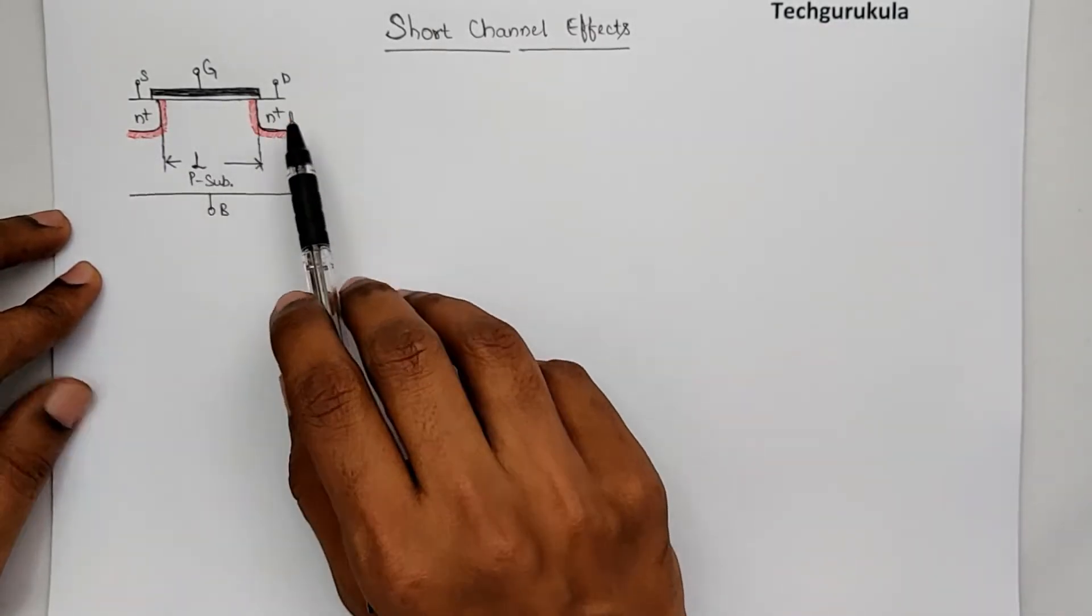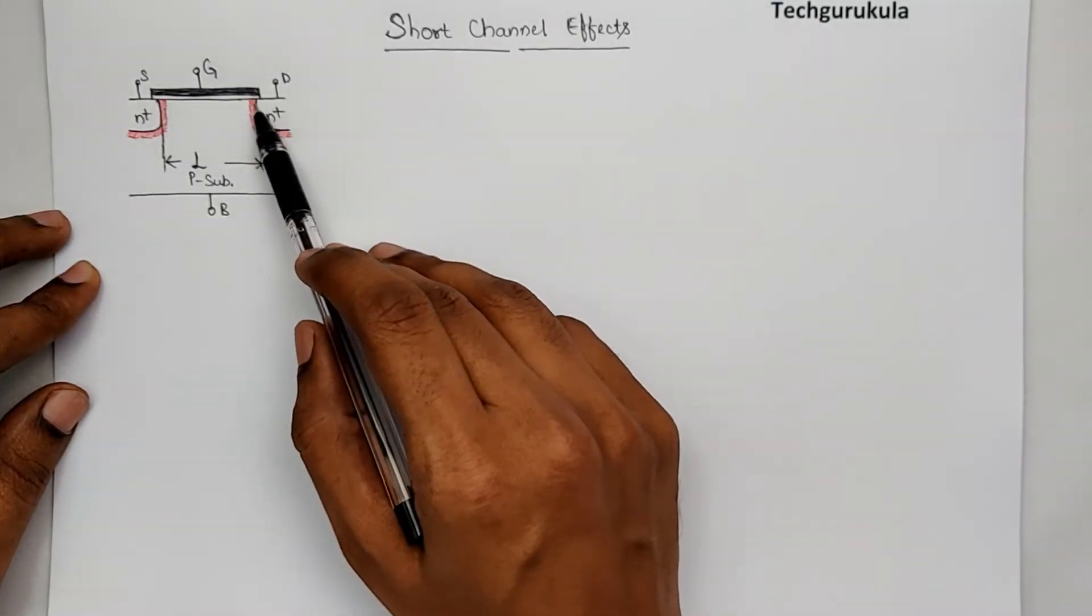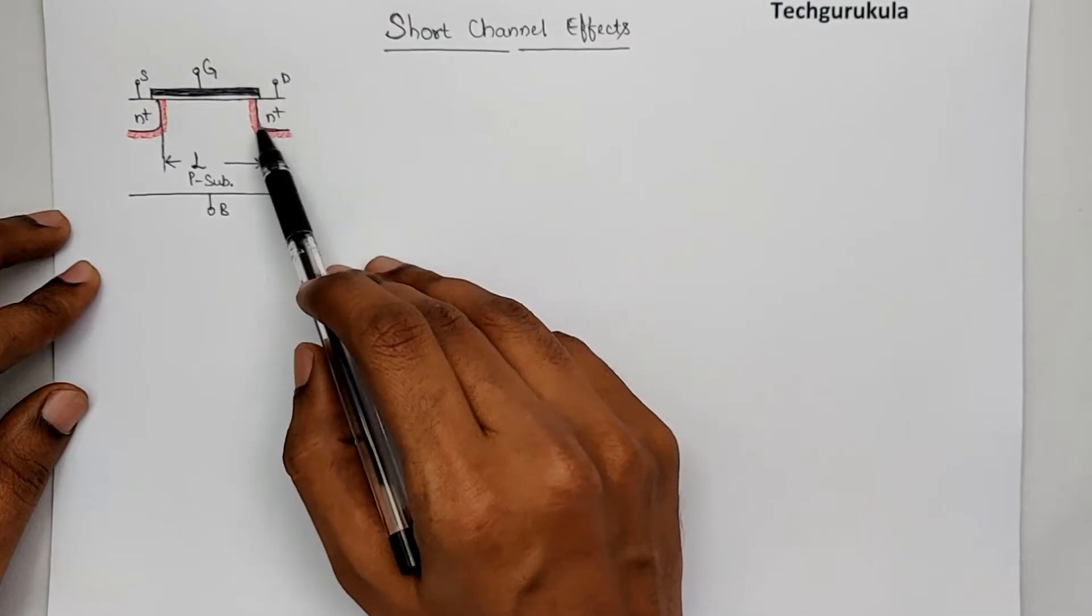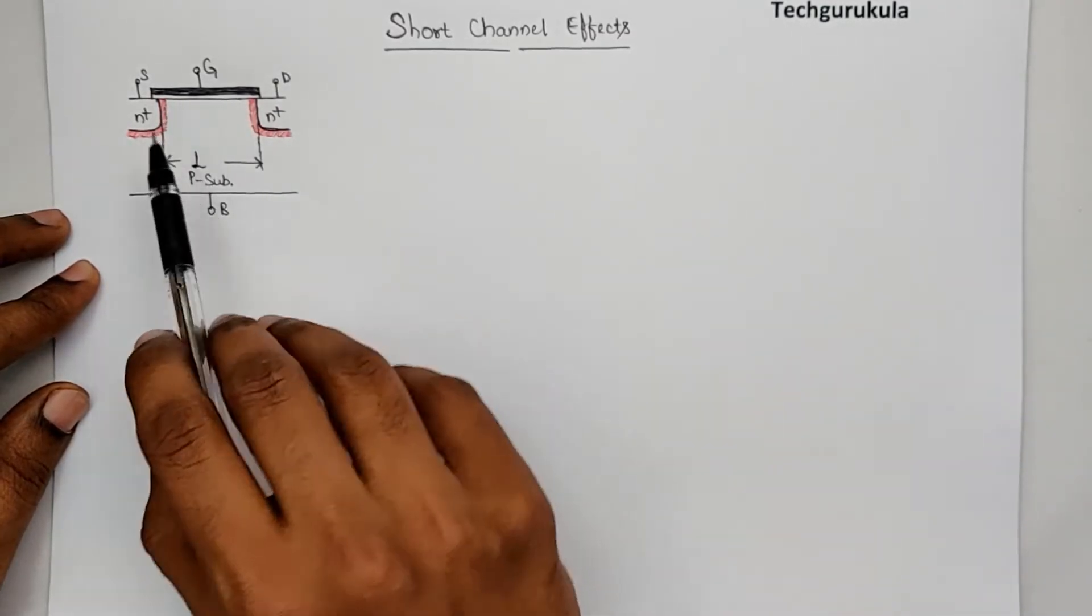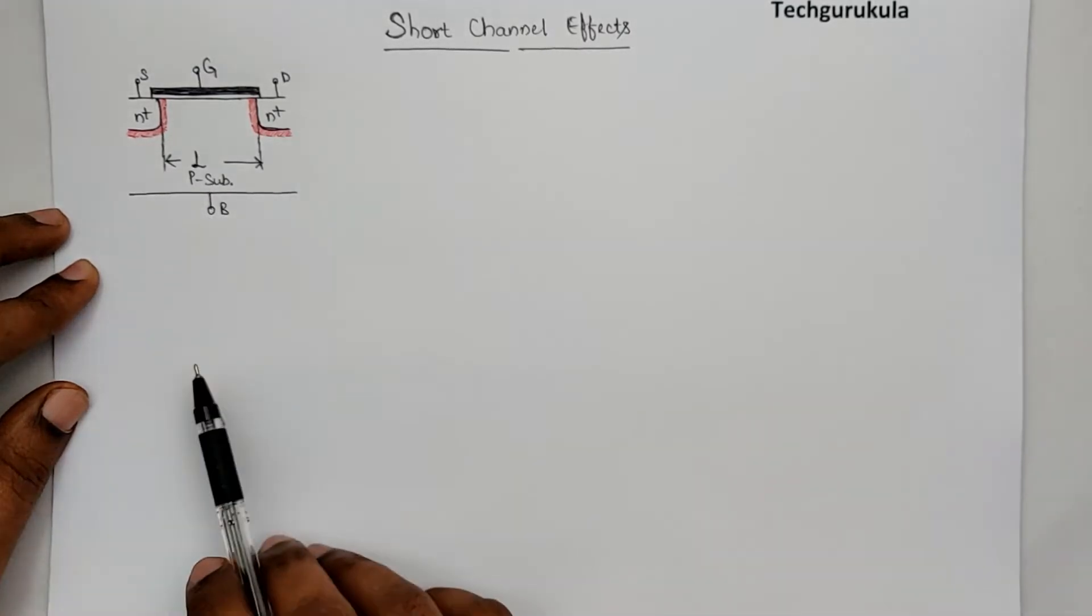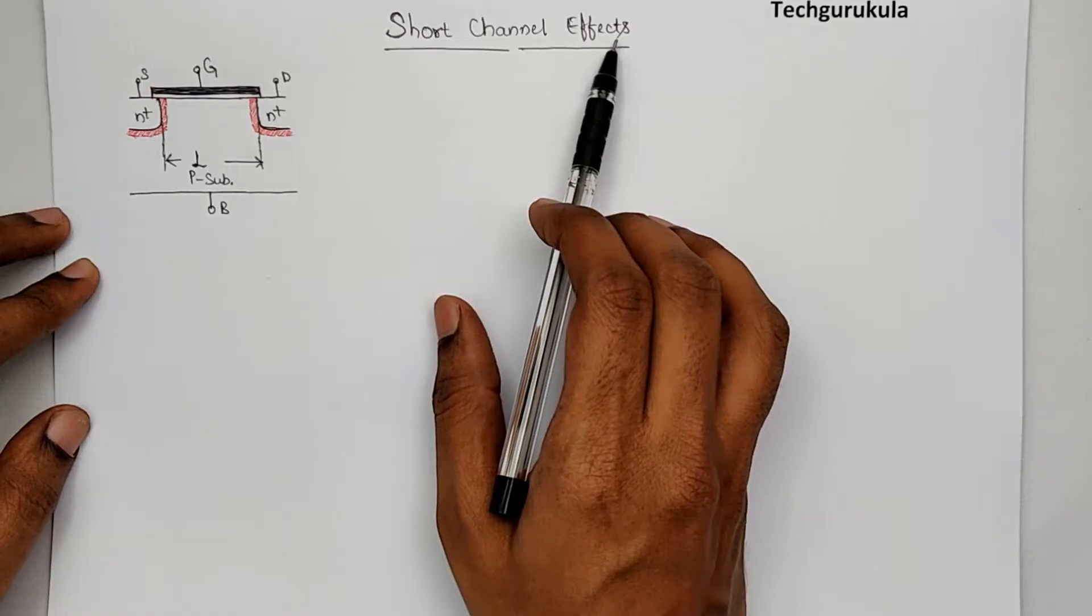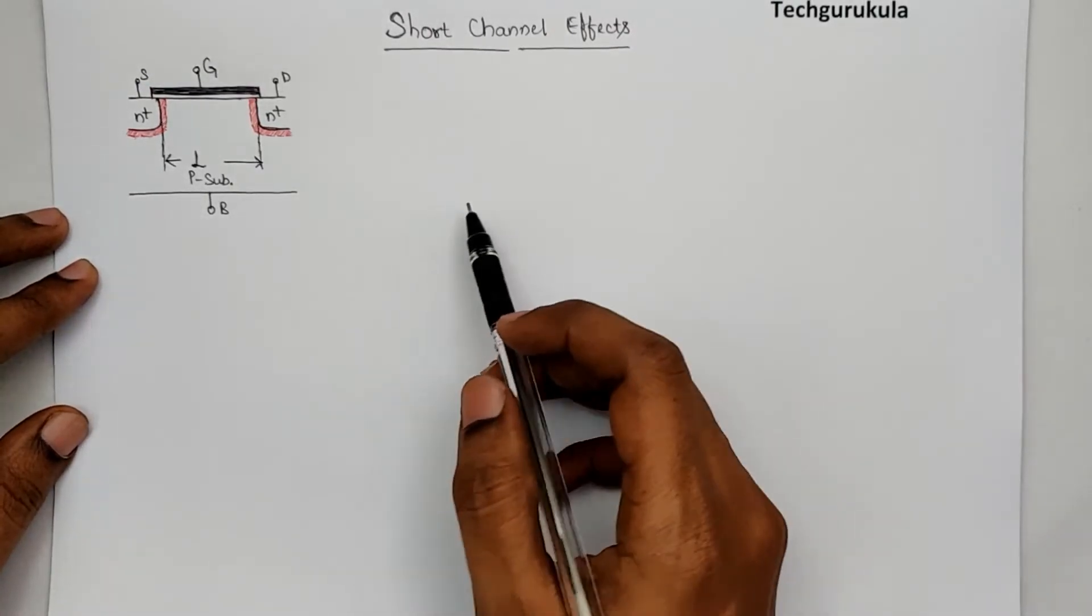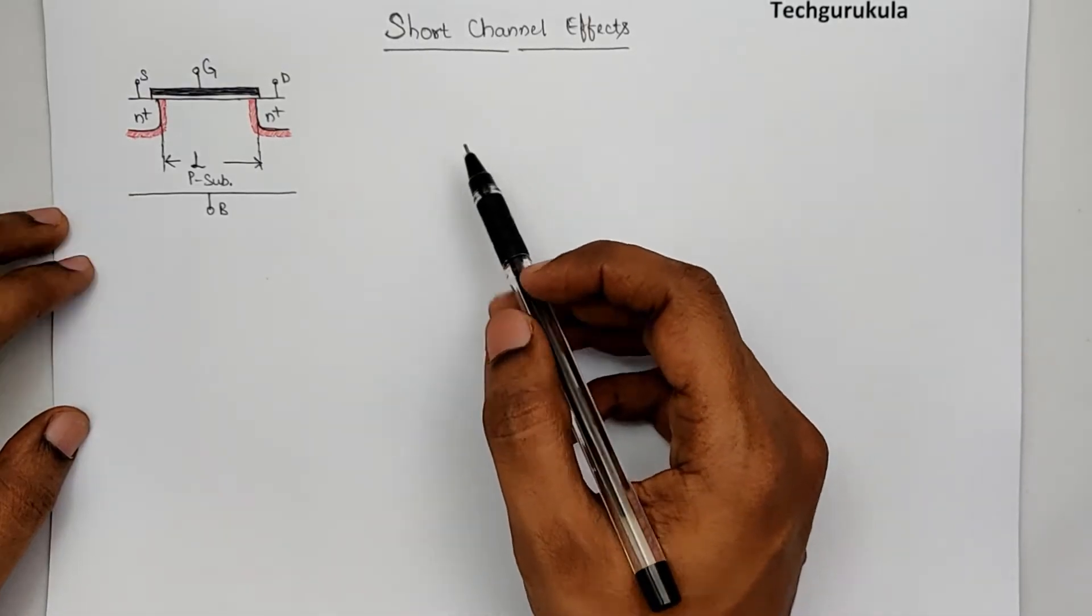Here I've shown when all the terminals are grounded, when there is a depletion region under equilibrium between drain N+ to substrate and source N+ to substrate. And I've shown the channel length. Now, coming to the topic, short channel effects, what do we mean by short channel?